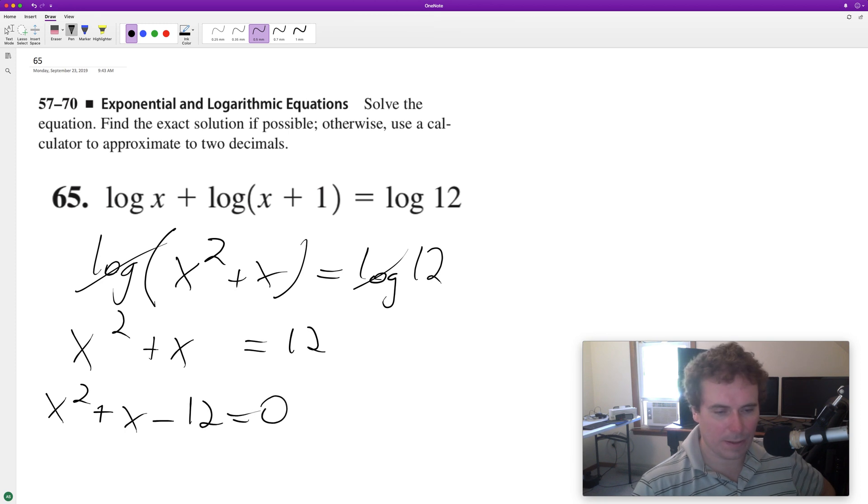We can factor this to be (x + 4)(x - 3). So we get roots of x = 3 and x = -4, but you got to be careful here. We can't have x = -4 because you can't take the log of a negative value.